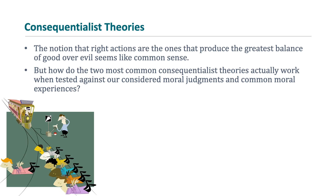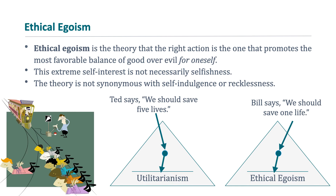We need to ask how these theories actually work when tested against our moral judgments and common moral experiences. One way we test this is by changing the scenario — not just considering flipping a switch in the trolley problem, but also what it would mean to push a large man off a bridge to stop the trolley. Most people change their common sense approach in that second situation. In this lecture we'll explore two types of consequentialist theories: ethical egoism and, in our next lecture, utilitarianism.